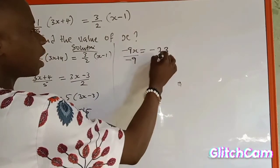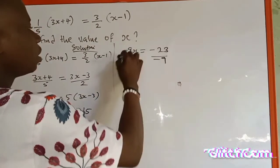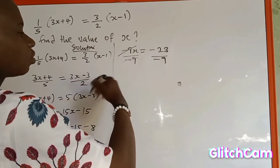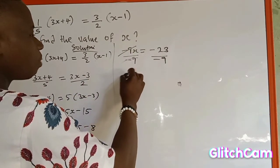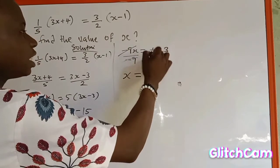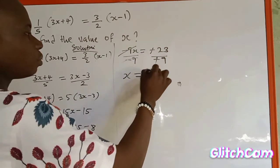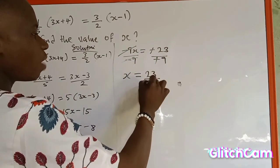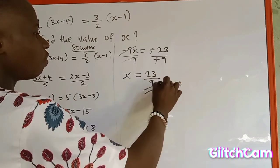So I have minus 9, then minus 9. So this minus 9 will cancel this minus 9. So my s now will be equal to, this negative will cancel this negative, equal to 23 over 9. So this is the value of my s.